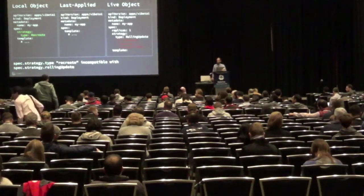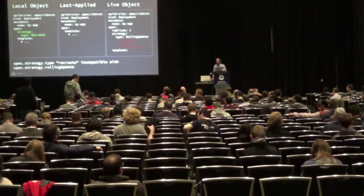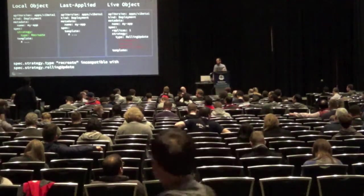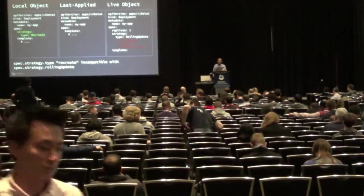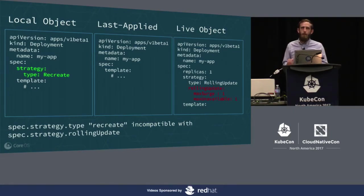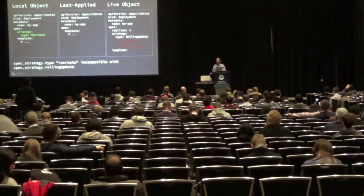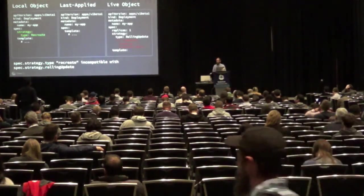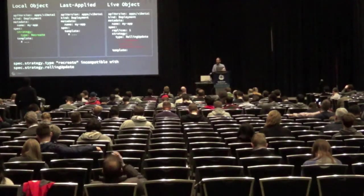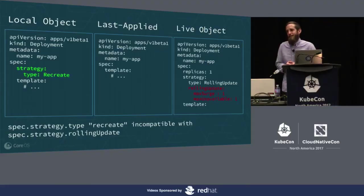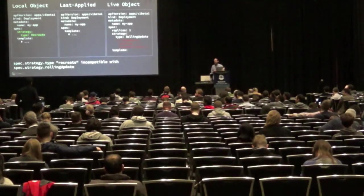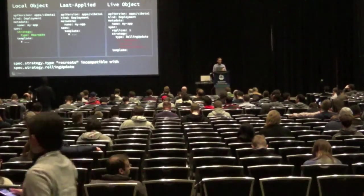Q&A: Question about whether defaulted fields are annotated in source code so you'd know beforehand what would happen with round-tripping. The speaker isn't certain where the defaulting logic lives, noting there's optional metadata on some fields. Someone from the audience mentions there are registered functions that apply all the defaulted fields. The speaker agrees it would be nice if it were annotated as clearly as the patch behavior in source code, which is well-documented right there. Thank you.